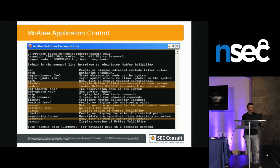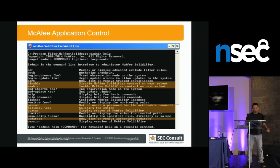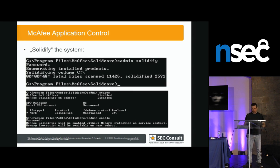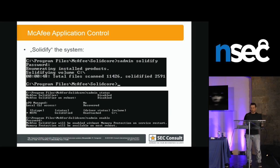If you want to work with this application, you work on the command line — there's no graphical user interface. You call the sadmin program and give it the command you want to execute, like disable, enable, or solidify — which is the first command. If you have set up your system, you say 'sadmin solidify', and it iterates over all files on your system and puts them in the whitelist. Here you see 2,500 files are now in the whitelist.